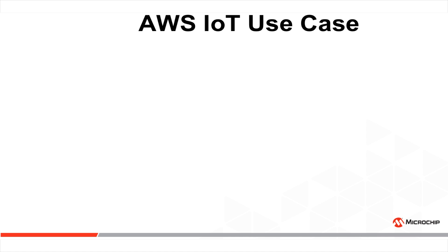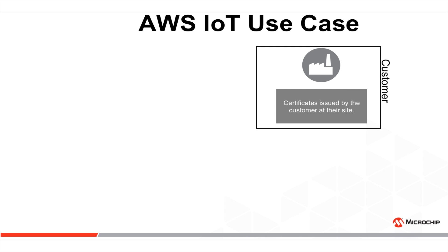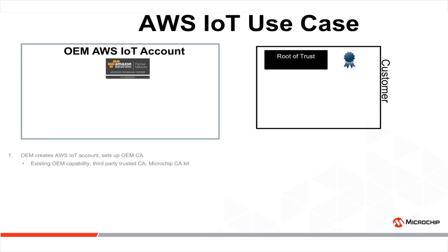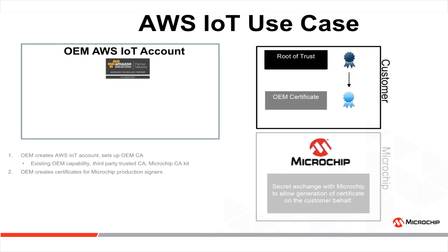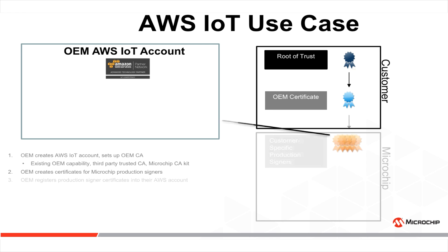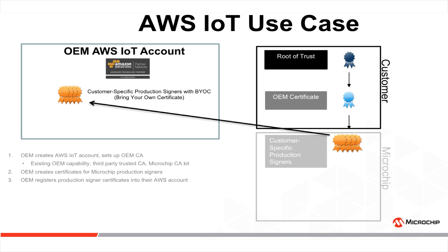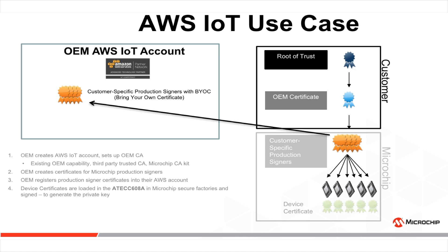In the AWS IoT use case, certificates are issued originally by the customer at their site. There is a root of trust that can come from the OEM capabilities themselves, a third-party trusted certificate authority, or by simply using the Microchip certificate authority kit. From that, an OEM certificate is generated. Then a secret exchange process between Microchip and the customer starts to allow the generation of certificates on the customer's behalf in Microchip facilities. The OEM registers the production signer certificates into their AWS IoT accounts using the bring-your-own-certificate function.